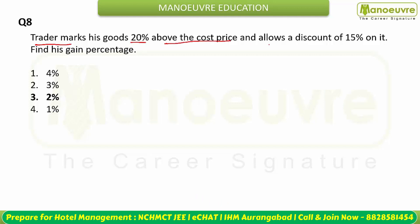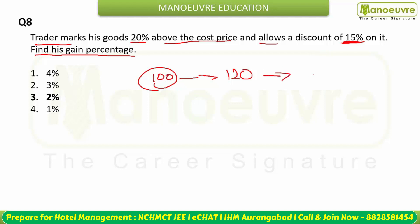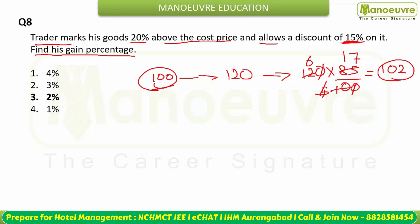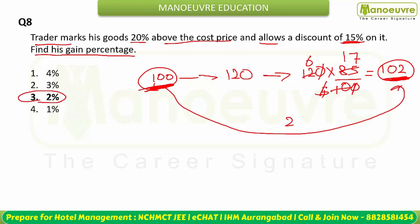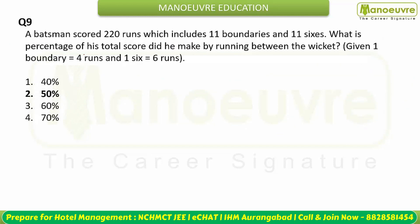A trader marks goods 20% above cost price and allows a 15% discount. Assume cost price = 100, so marked price = 120. After 15% discount: selling price = 120 × 85/100 = 102. Started at 100, sold at 102, so gain = 2%. Therefore the gain percentage is 2%.